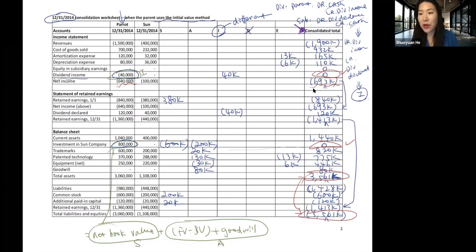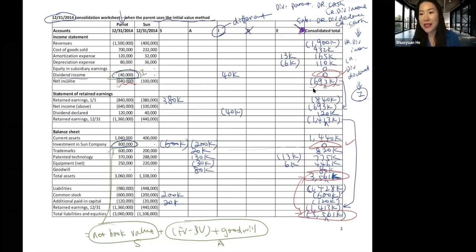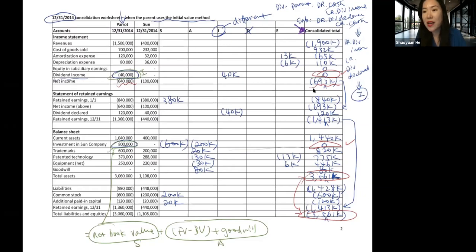Those three columns are exactly the same. This means that no matter which internal method the parent uses to maintain its own books, it does not affect the consolidated total numbers that investors are going to see. So for investors, whether the parent uses the equity method, the initial value method, or the partial equity method, it doesn't matter — they will see the same consolidated total numbers.